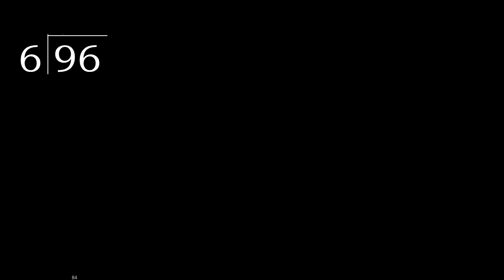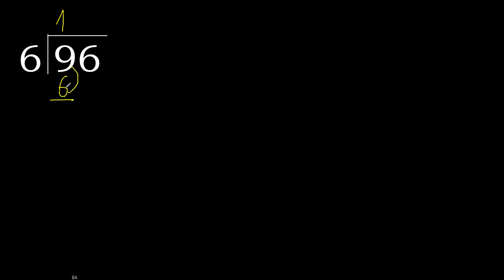96 divided by 6. 9 is not less, therefore with 9: 6 multiplied by which number is nearest to 9 but not greater? 6 multiplied by 2 is 12, which is greater. 6 multiplied by 1 is 6 — it is not greater. 9 minus 6 is 3.